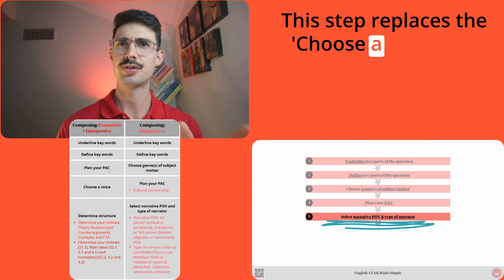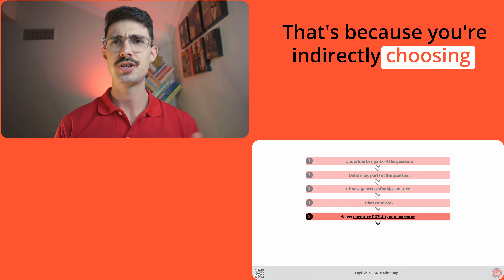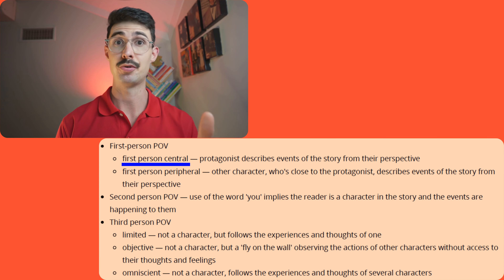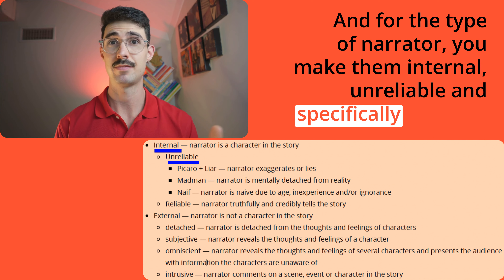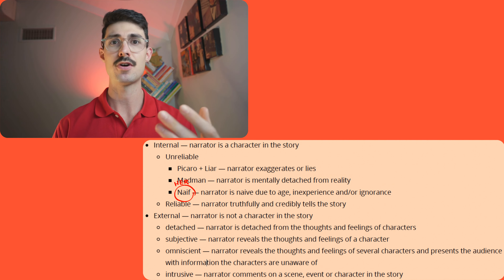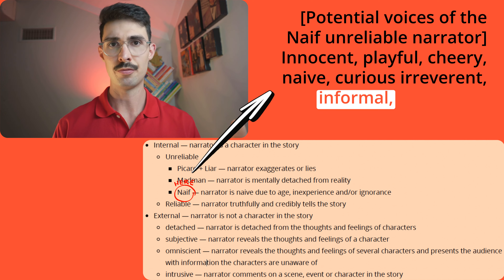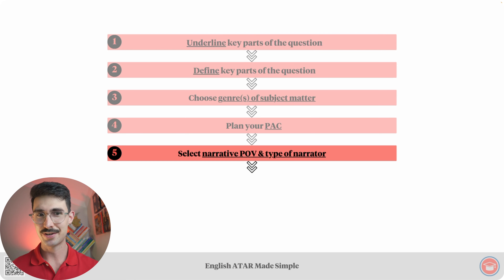A couple of notes about step number five. This step replaces the 'choose a voice' step from the planning steps for interpretive and persuasive texts, because you're indirectly choosing a voice when you plan the type of narrator. For example, if you choose first person central POV and make the narrator internal, unreliable, and specifically the naif, you're indirectly giving them a voice that is innocent, playful, cheery, naive, curious, irreverent, informal, humorous, and friendly. The second note: I wouldn't choose second person narrative POV unless you're an experienced creative writer.